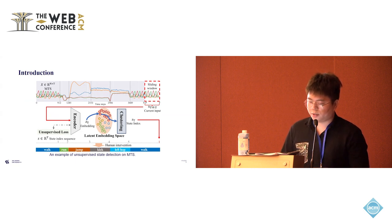As shown in the example, we obtain the current input from a sliding window, which is then sent to an encoder, a deep learning-based encoder to create its embedding. Finally, the embedding is sent to a cluster model, which determines the state index.